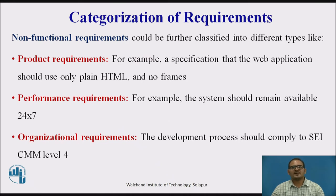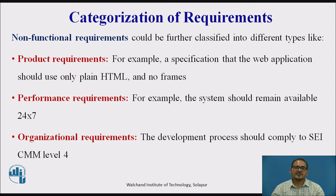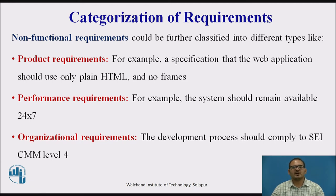Non-functional requirements can be further classified into different types: product requirements — for example, a specification that a web application should use only HTML5 and no framesets; performance requirements — for example, the system should remain available 24/7; and organizational requirements — for example, the development process should comply with the Software Engineering Institute Capability Maturity Model Level 4.